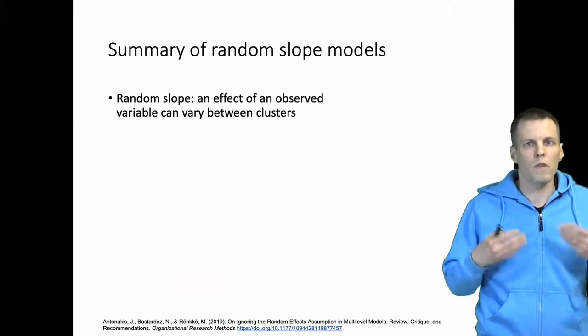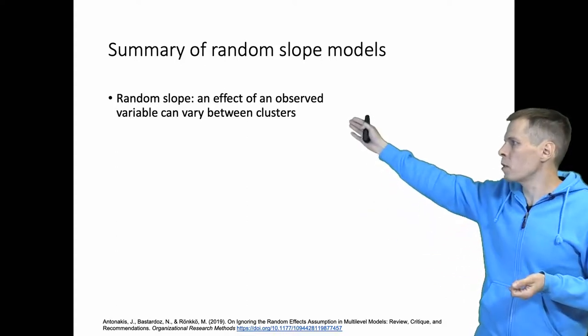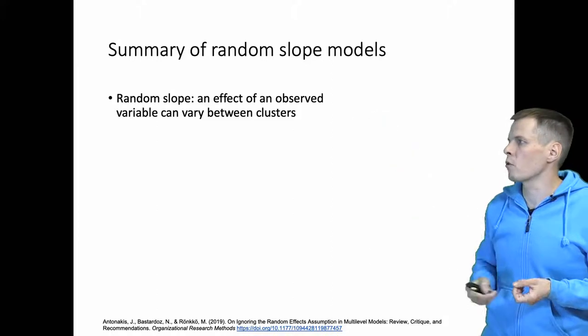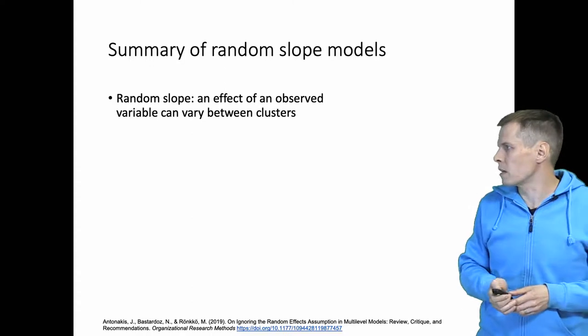To summarize random slope models: Random slope models are used when we want to model a scenario where an effect of an observed variable can vary between clusters.